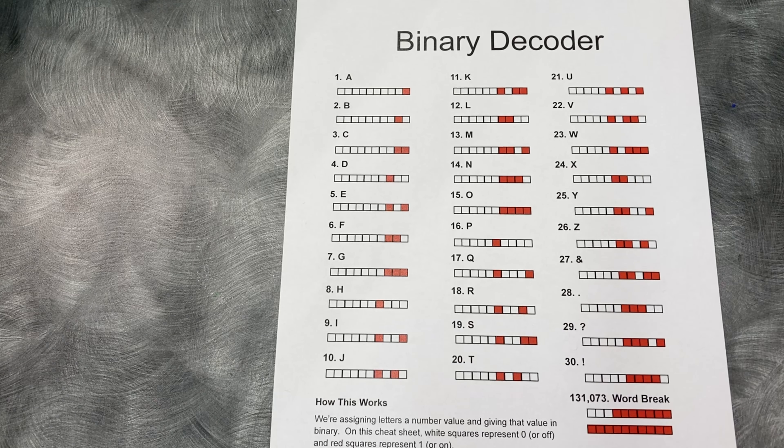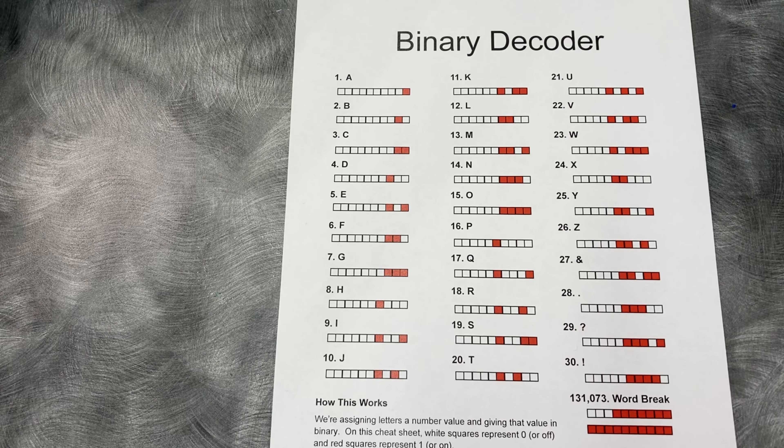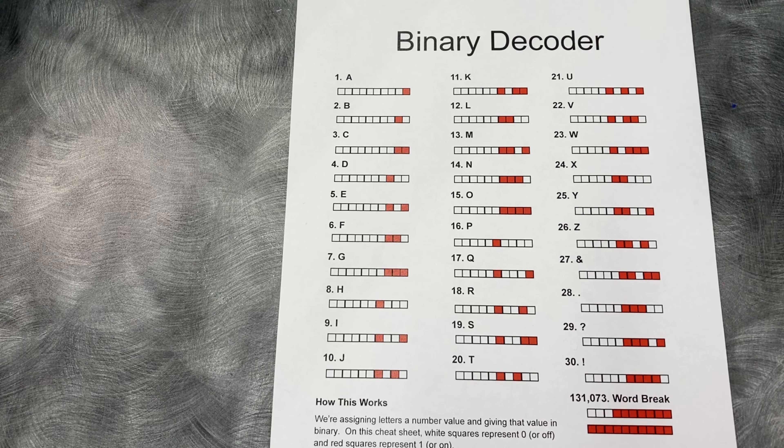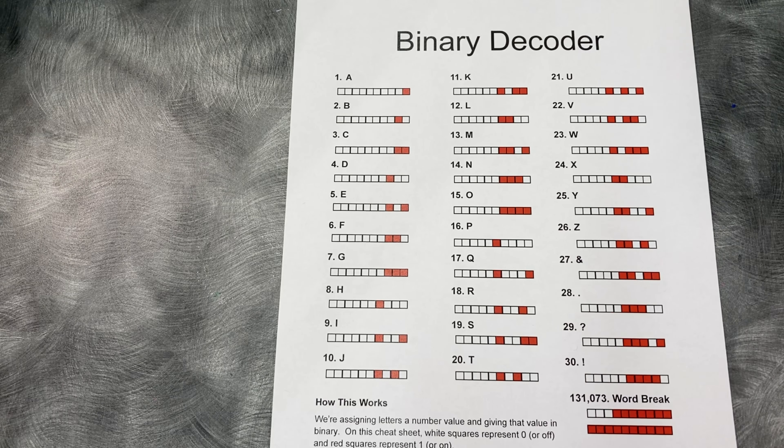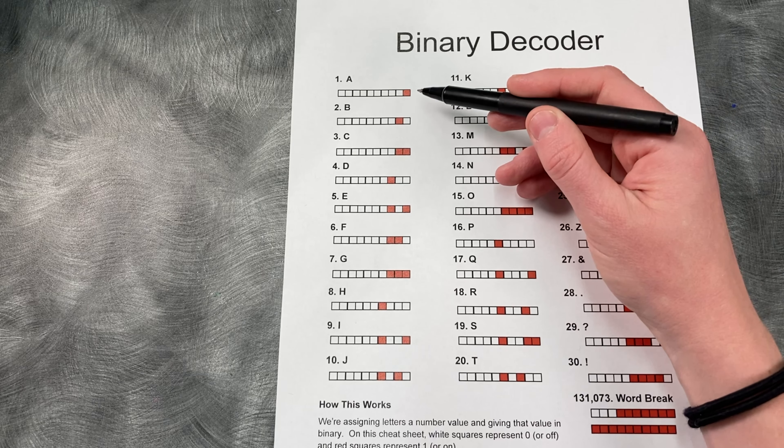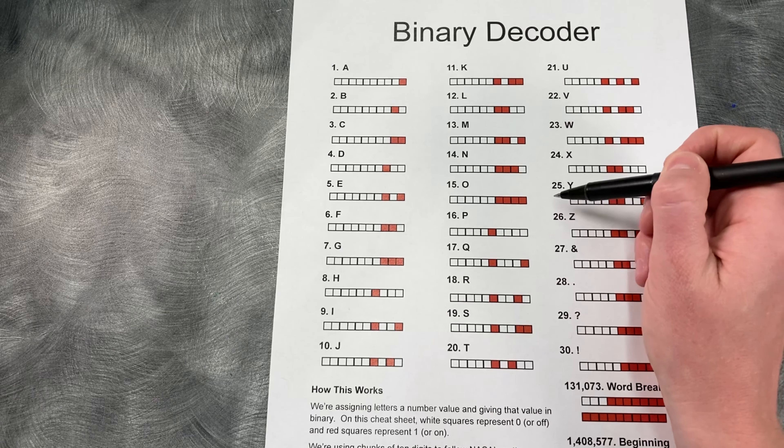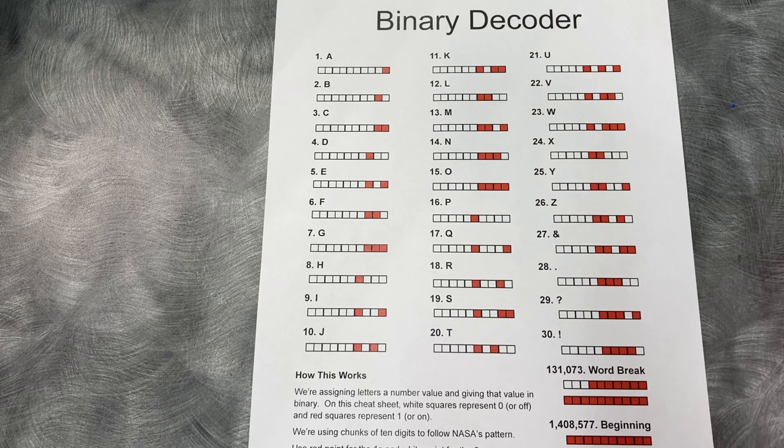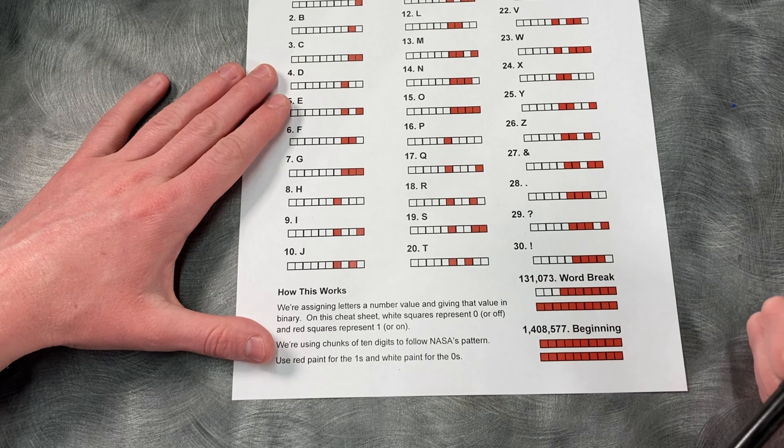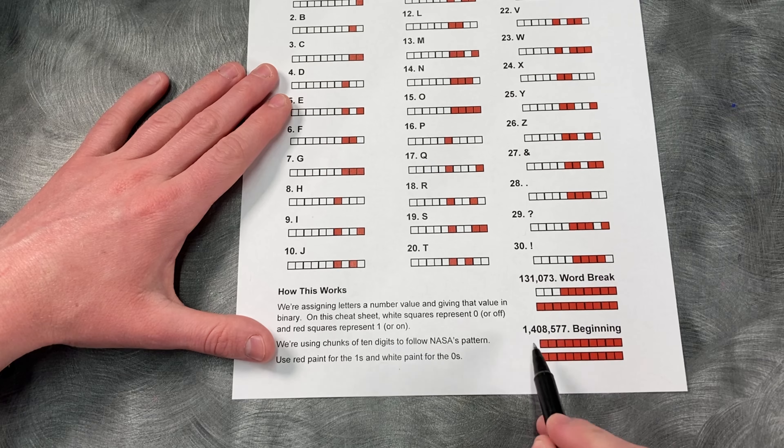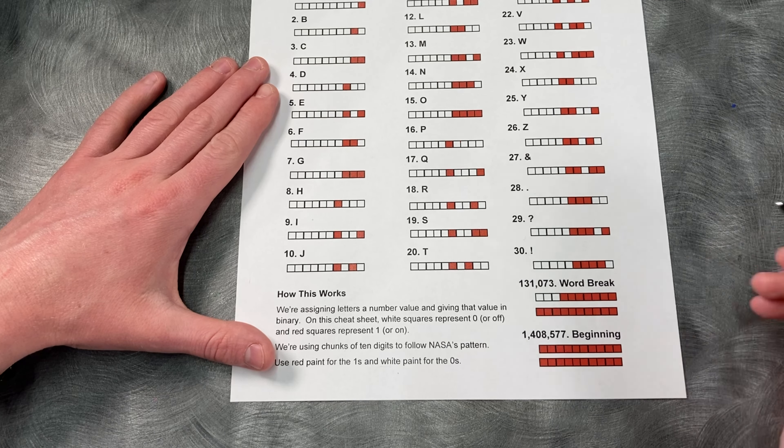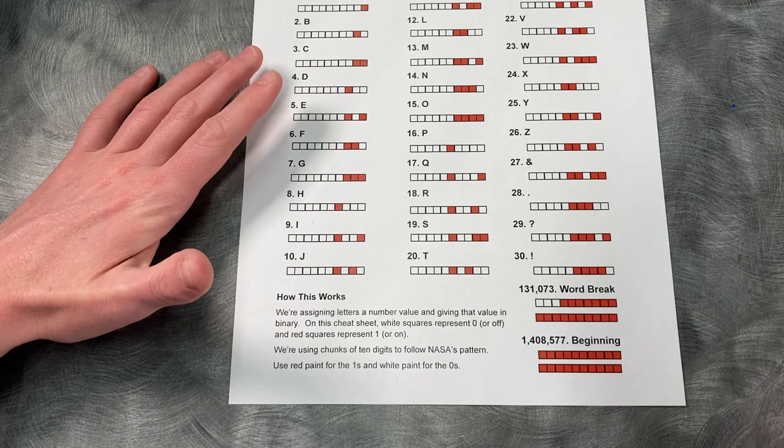In your kit, you're going to have a couple extra pieces of paper that are really going to help you out. There's going to be a binary decoder, a sheet to write your message on, and then a sheet to actually test out what your design is going to look like before you start permanently painting. Let's go over the decoder real quick. What NASA did is they just had numbers stand in for letters. So since A is the first letter of the alphabet, it gets to be number 1. Since O is the 15th letter of the alphabet, it gets to be number 15, and so on. NASA did a couple of other quirky things. When they started off their message, they blocked off a whole 20 digits in red or ones, which you can see is quite large in binary, to announce they were starting.